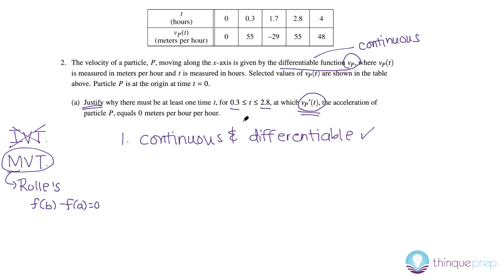Let's also check what our difference between our f(b) and our f(a) is. So, they give us these as our boundaries, so we can call 0.3 our a and 2.8 our b. So, this is our a and this is our b. Therefore, this would be our f(a) and this would be our f(b). So, then f(b) minus f(a) is equal to 0. So, we've also satisfied that condition for Rolle's theorem.